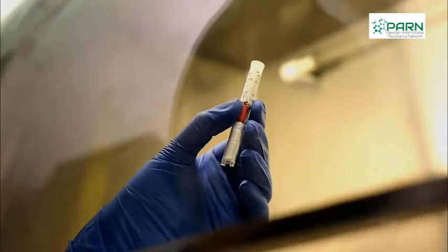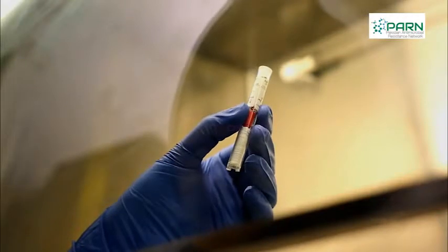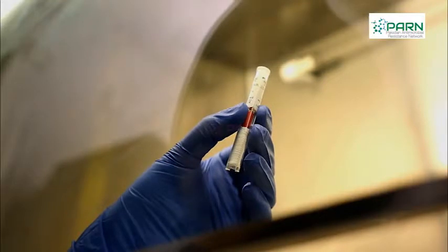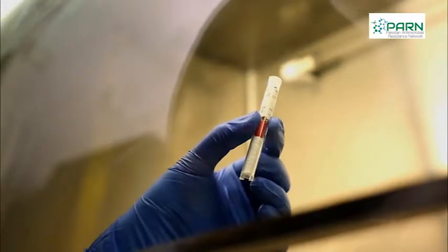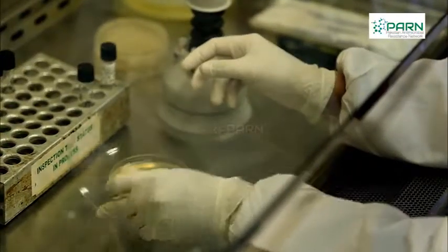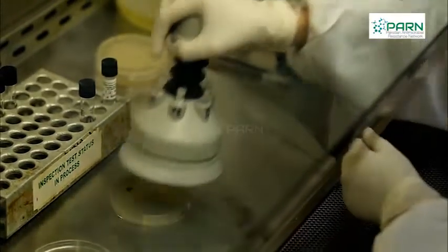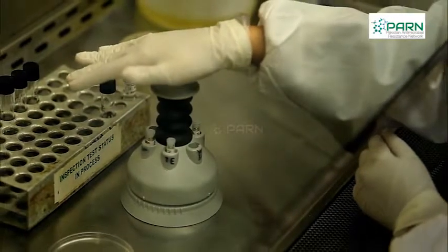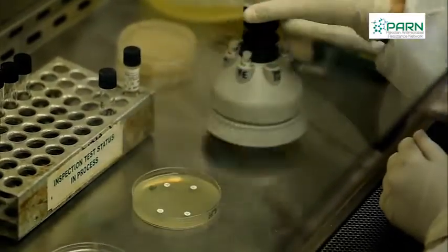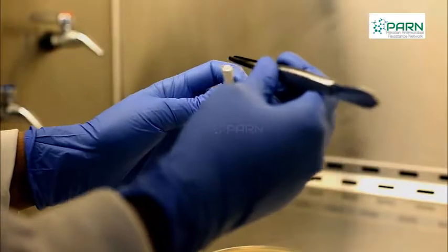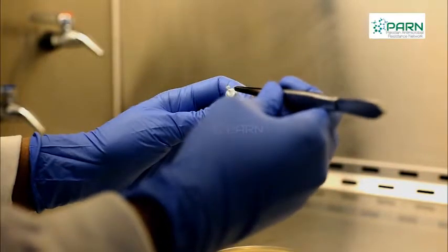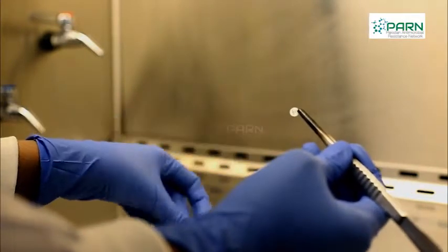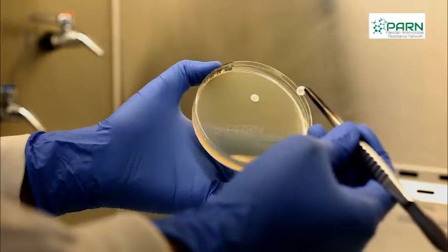Take antibiotic discs out of the refrigerator and use within 30 minutes. Do not leave them out for longer. If using the disc dispenser, place the dispenser over the agar plate and press the plunger to dispense the discs. Alternatively, if a disc dispenser is not available, add discs one at a time using forceps by firmly pressing the discs against the agar surface.